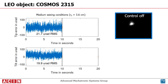The following time signals are recorded using the LEO object Cosmos 2315. Without active tip-tilt compensation, an RMS error in the range of 20 micro radians is observed. The video with the blue frame shows the corresponding camera recording, which highlights the movement of the laser spot on the receiver.